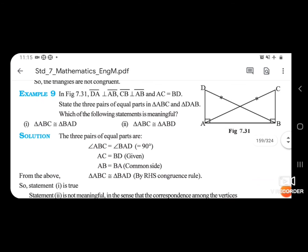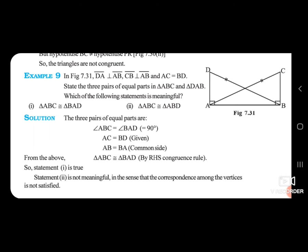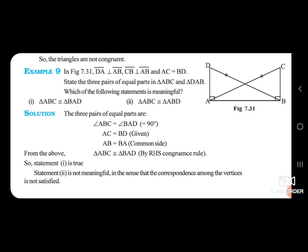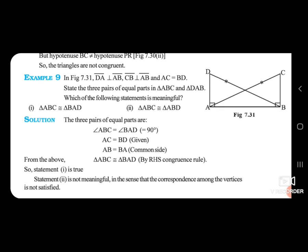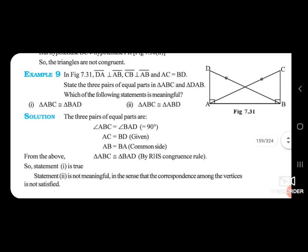Which of the following statements is meaningful? Dekho yahan par, kaunsa statement meaningful hai — Triangle ABC congruent Triangle BAD, ya Triangle ABC congruent Triangle ABD? The pairs of equal parts are: angle ABC aur angle BAD — dono 90 degree hain. AC equals BD — wo aapko diya hai. AB equals BA — wo common side hai dono mein.